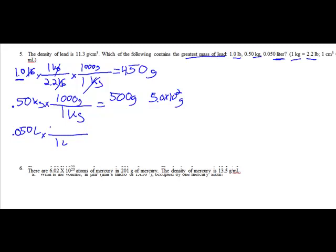For every one liter, there are 1,000 milliliters. My liters will cancel out. I have milliliters. Now I look up in the hints. I got one centimeter cubed is one milliliter. Now I'm in centimeters cubed. Now I can use my density as a conversion factor. 11.3 grams per centimeter cubed. My centimeter cubes cancel out.